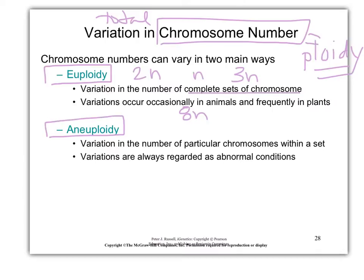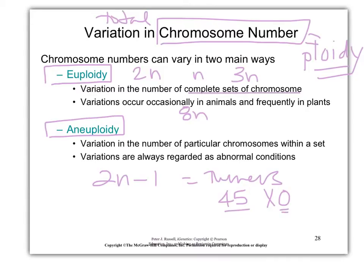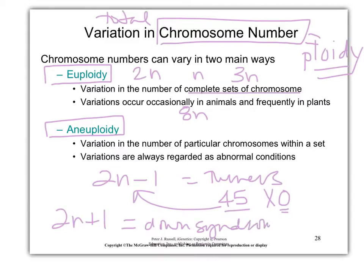Aneuploidy is when you're not a complete set. 2n minus 1 — that would be Turner syndrome. Turner's is 45 chromosomes XO, missing a chromosome: 45 instead of 46. That is 2n minus 1. And 2n plus 1 — Down syndrome. What is Down syndrome? 47, trisomy 21. Supposed to be 46.